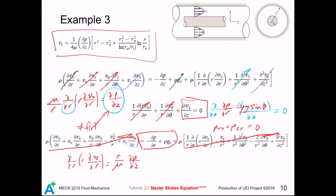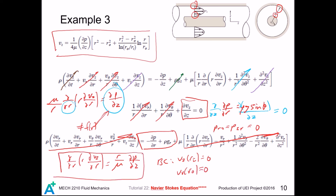We are going to solve this equation in the next page. Before solving, let's determine the boundary conditions first. At r equals the inner radius, the fluid sticks to the inner cylinder, giving one boundary condition. Also, at the outer radius, the fluid sticks to the outer cylinder, giving a second boundary condition. Then we are ready to solve this differential equation.